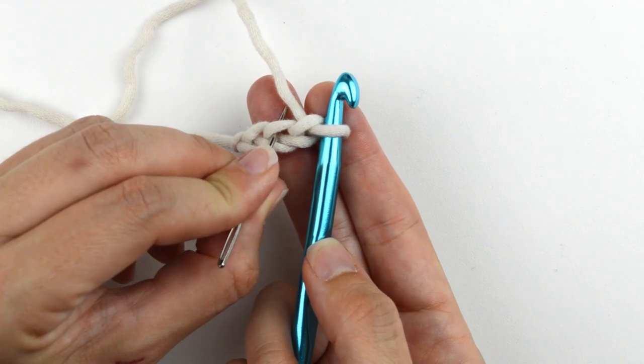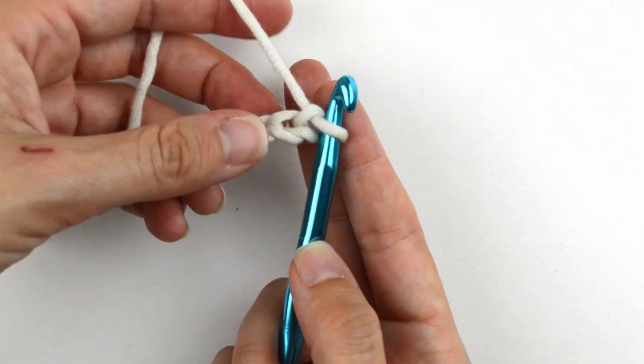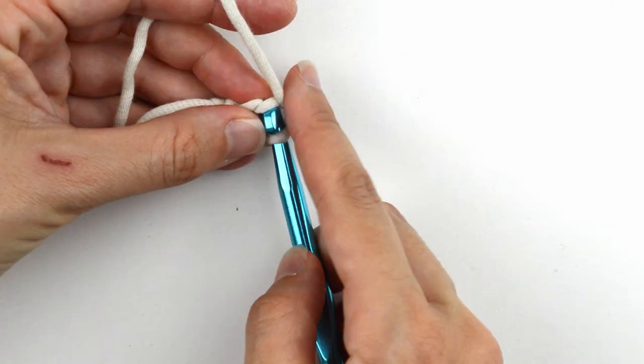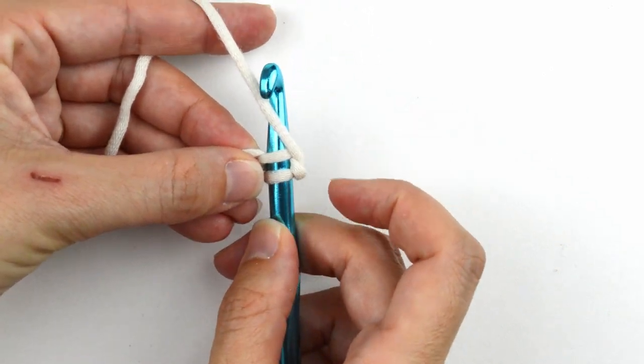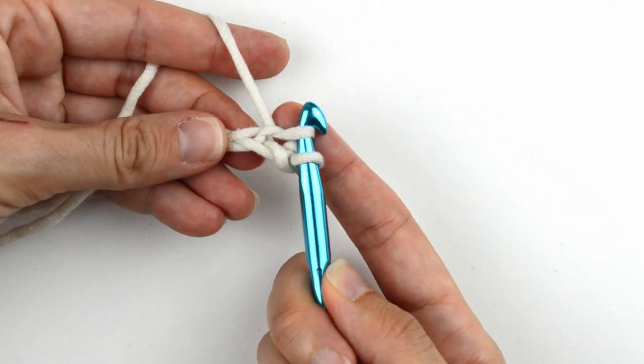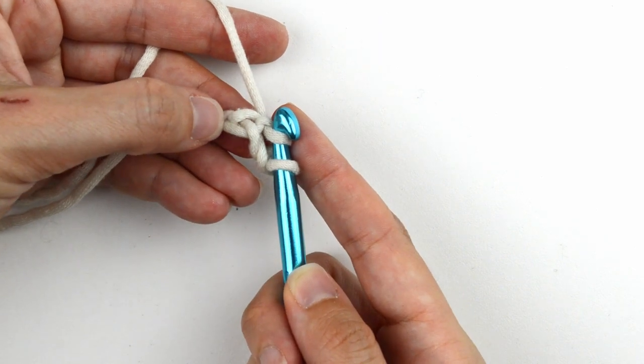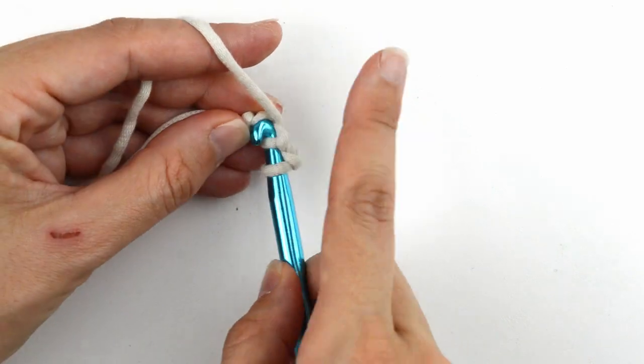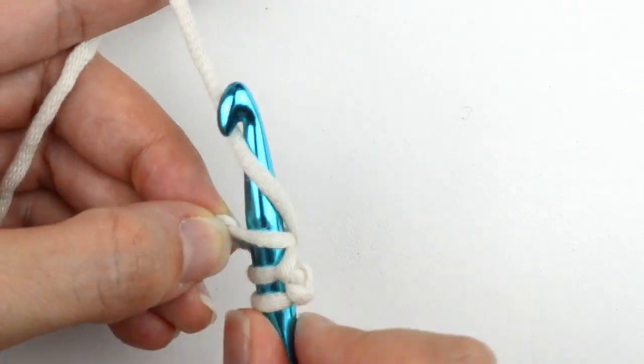I'll insert my hook into that second chain, yarn over and pull through. Then go into the next chain, which is my last chain. Yarn over and pull through.